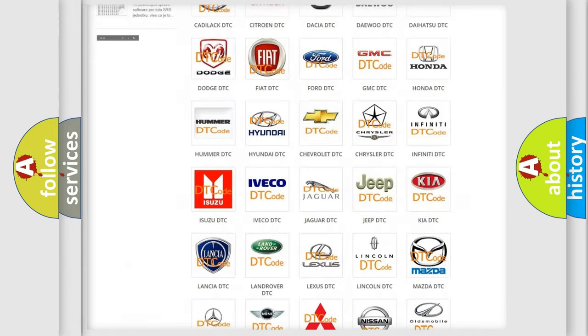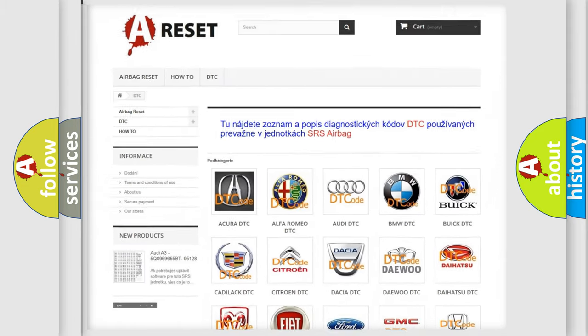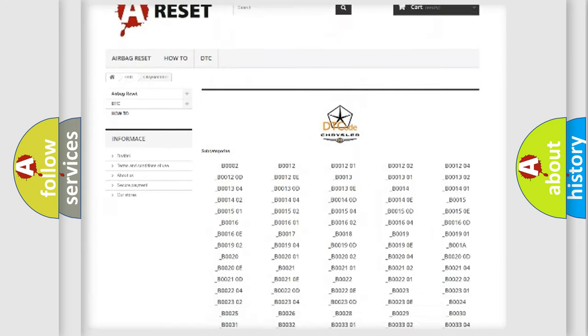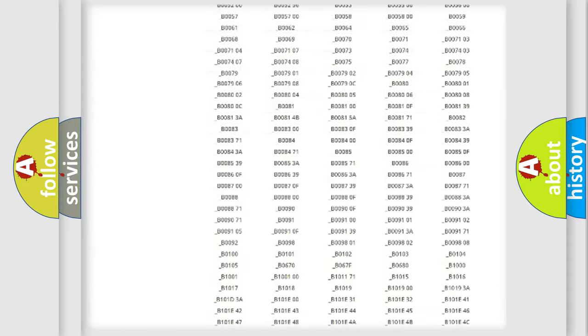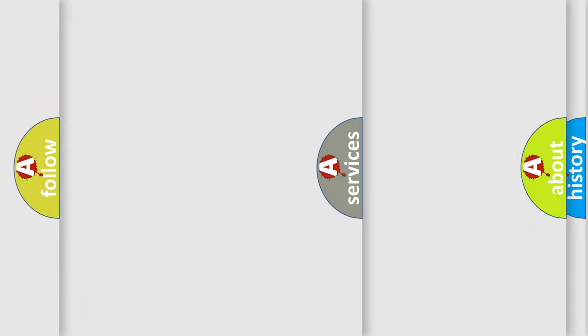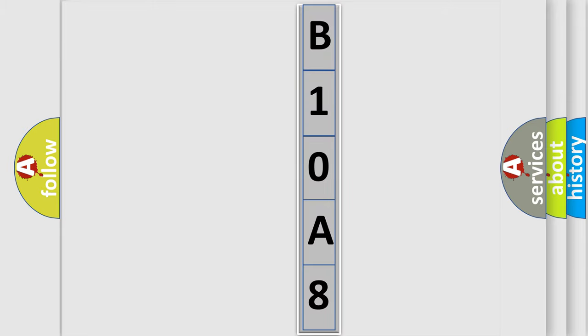Our website airbagreset.sk produces useful videos for you. You do not have to go through the OBD2 protocol anymore to know how to troubleshoot any car breakdown. You will find all the diagnostic codes that can be diagnosed in Chrysler vehicles. Also many other useful things. The following demonstration will help you look into the world of software for car control units. You can move the video a bit further.